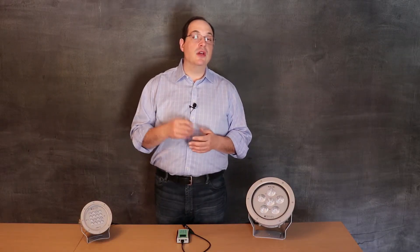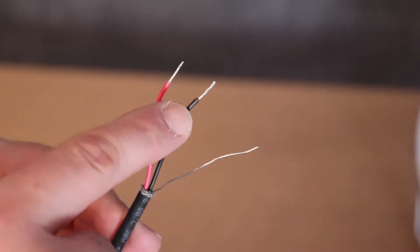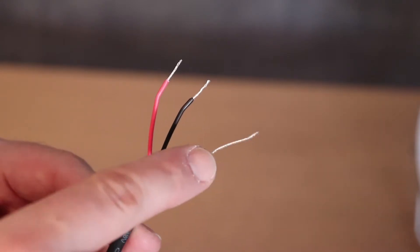Make sure you understand the polarity of the DMX wiring you're tying into before connecting. For GRIVEN product, red is DMX+, black is DMX-, and the silver unjacketed wires are DMX ground.